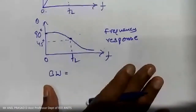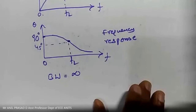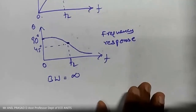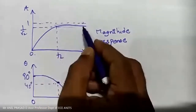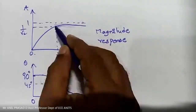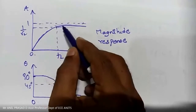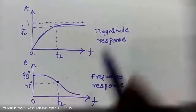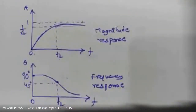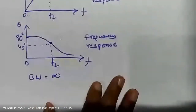The upper limit of the RC high pass filter bandwidth is infinity, so the bandwidth is infinity. Beyond FL, the gain starts increasing and tries to remain constant near 1. Only after FL does the gain reach the maximum of 1/√2 times. In the RC low pass filter case the bandwidth is FH, but here it is infinity — from FL to infinity the gain is at least 1/√2 of maximum.